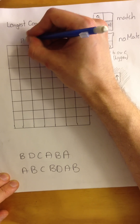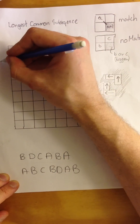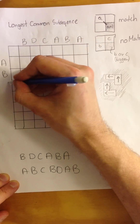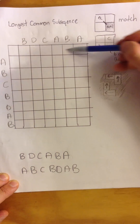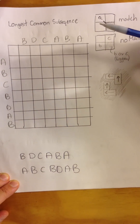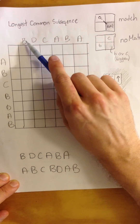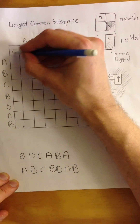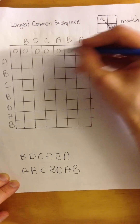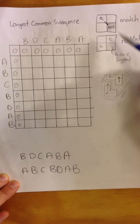I'm filling out the x-axis: B, D, C, A, B, A. The other sequence goes on the left: A, B, C, B, D, A, B. As you can see there is one extra column and row. That is because we want to note what happens when there is a letter and nothing — obviously there's no match. So we are putting zeros here.